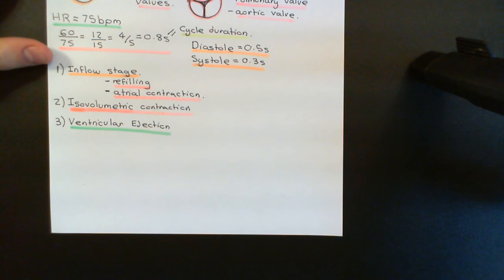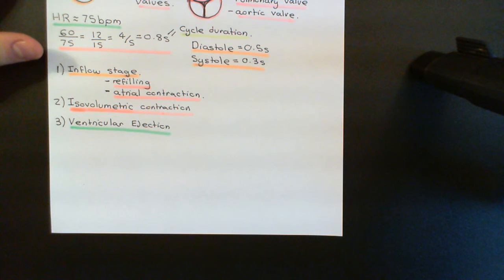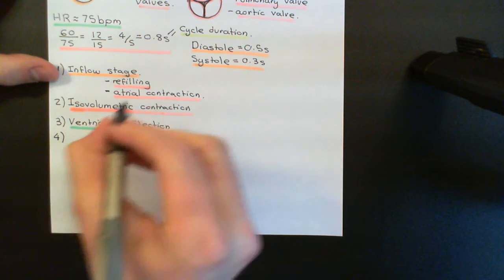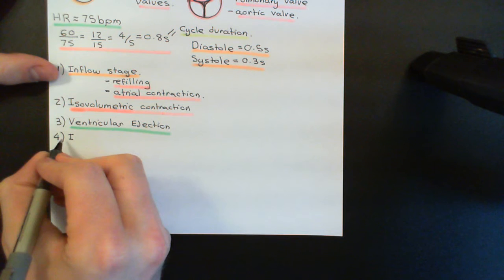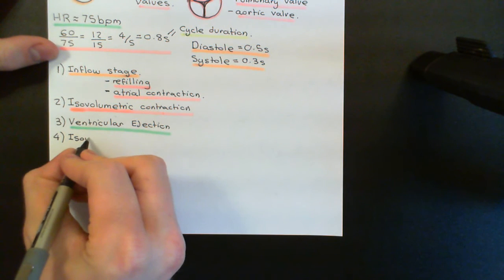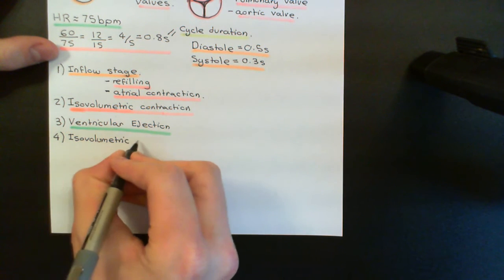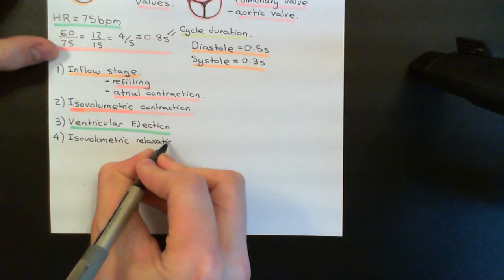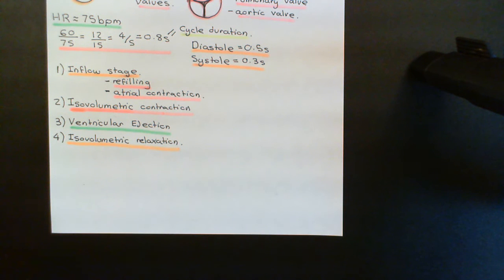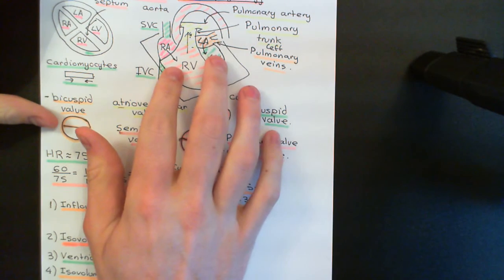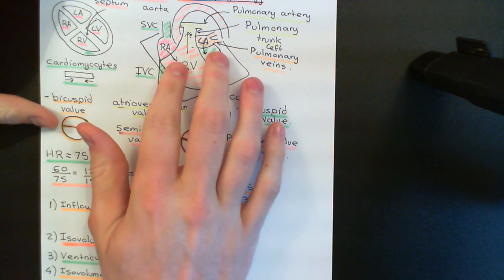Blood will be pushed from the right ventricle into the pulmonary trunk to go around the lungs, and from the left ventricle out into the aorta to go around the entire body. Now that's the end of systole - we're going to go back to diastole and the ventricles need to relax. Initially there's another stage of diastole before going back to the inflow stage, called isovolumetric relaxation. The cardiomyocytes start relaxing, the tension in the wall of the ventricles goes down hugely, and the pressure in both ventricles decreases.